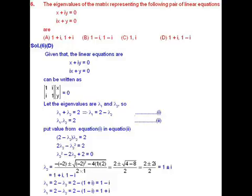Given that the linear equations are x plus iota y equals 0 and iota x plus y equals 0, the linear equations can be written in matrix form as [1, iota; iota, 1] multiplied by [x; y] equals 0.